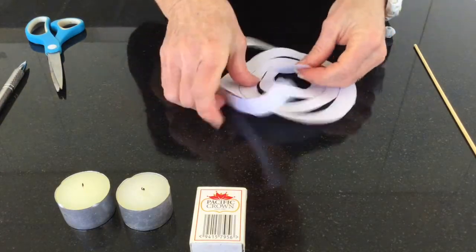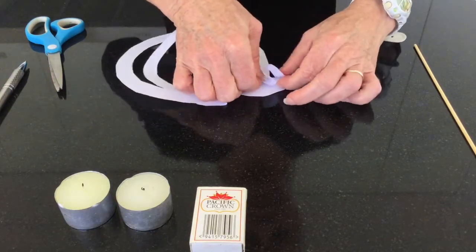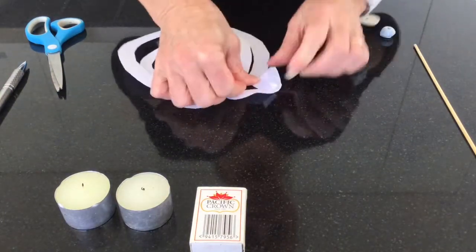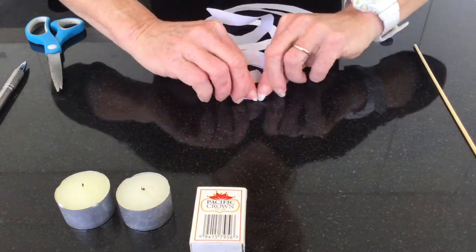So now in the middle part, I just want you to fold that over. I'm just going to make a little bit of a square shape.